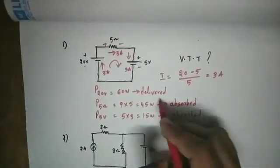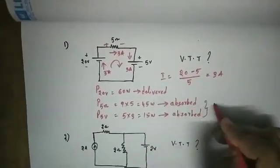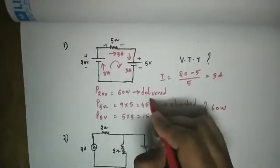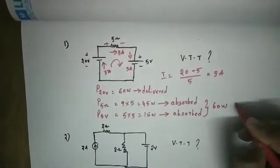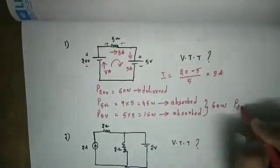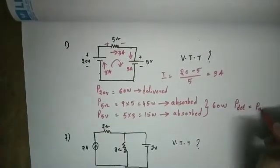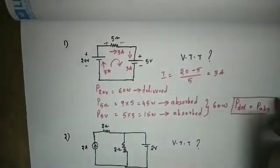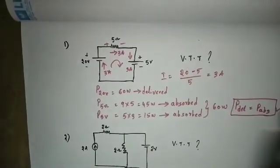Total absorbed power is 60 watts. Delivered power is equal to absorbed power, and power is conserved. So this is satisfied — Tellegen's theorem is verified.